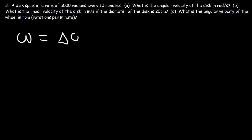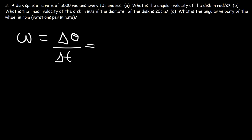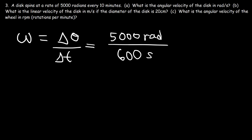Let's work on number 3. A disk spins at a rate of 5,000 radians every 10 minutes. What is the angular velocity of the disk in radians per second? To calculate angular velocity, we use angular displacement divided by change in time. The disk spins 5,000 radians, and the time is 10 minutes — converted to seconds that's 600 seconds. So the disk spins 5,000 radians every 600 seconds, giving an angular velocity of 8.33 radians per second.